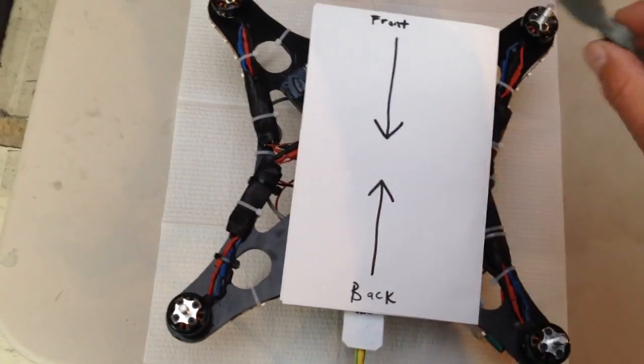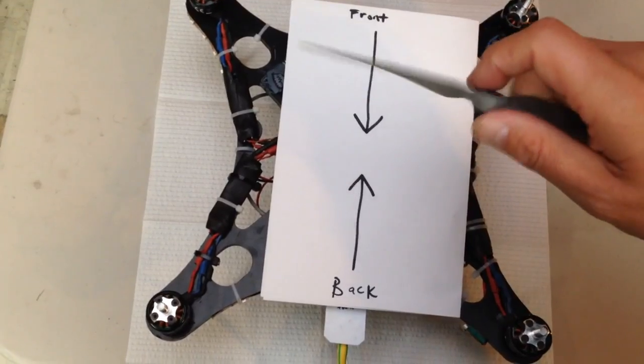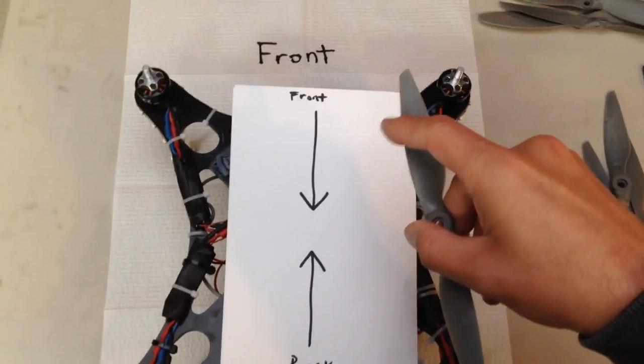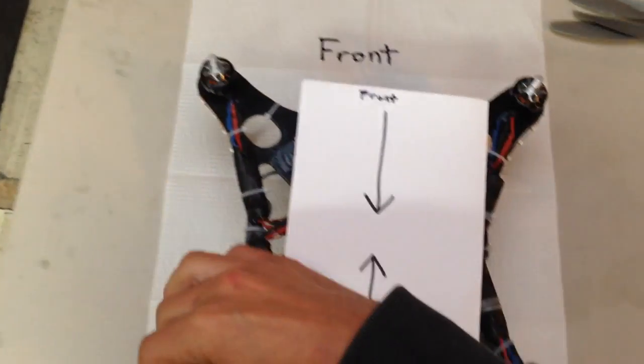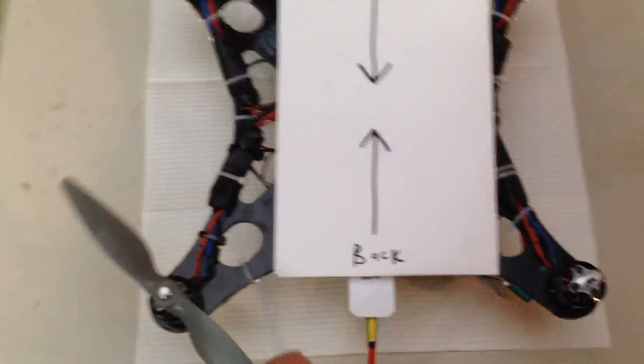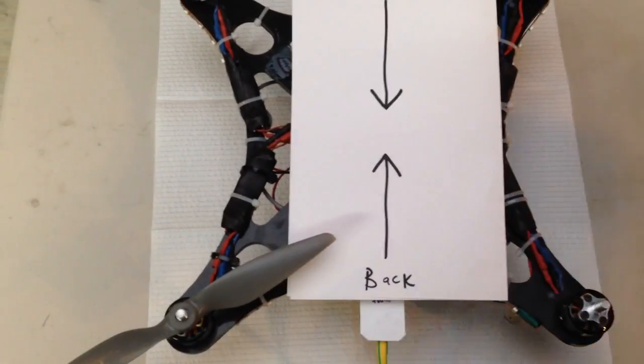So if I take a prop like this and I don't know which one it is yet, and I've got the leading edges right here, I know that this one can go either on the front right or I believe the back left. And that's correct because the leading edge is coming into the quad here.